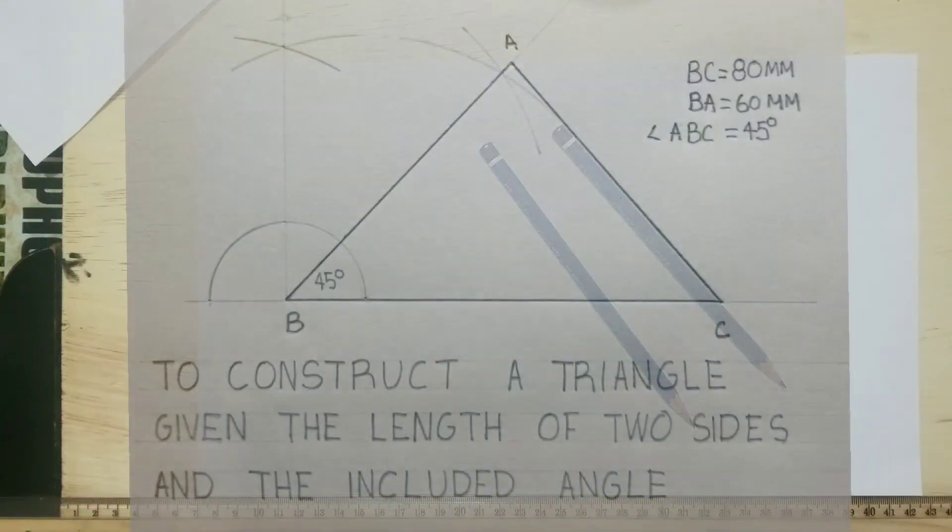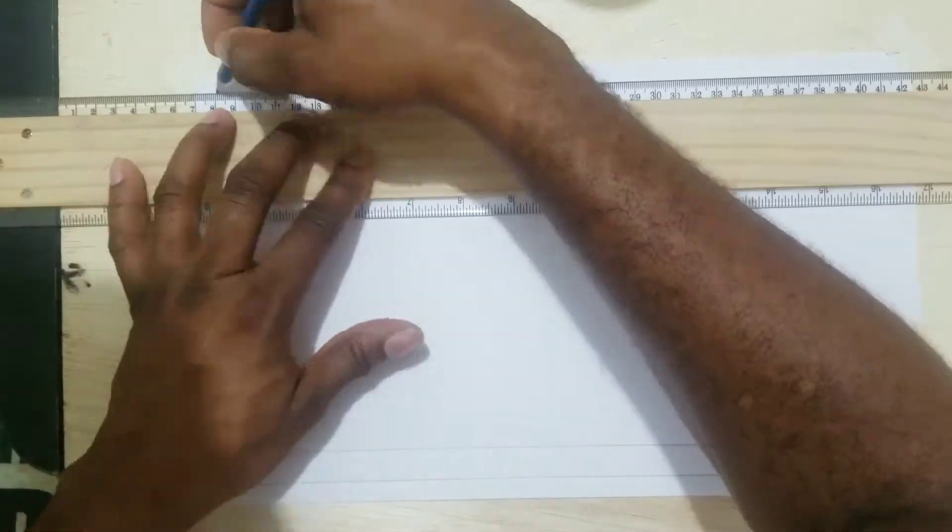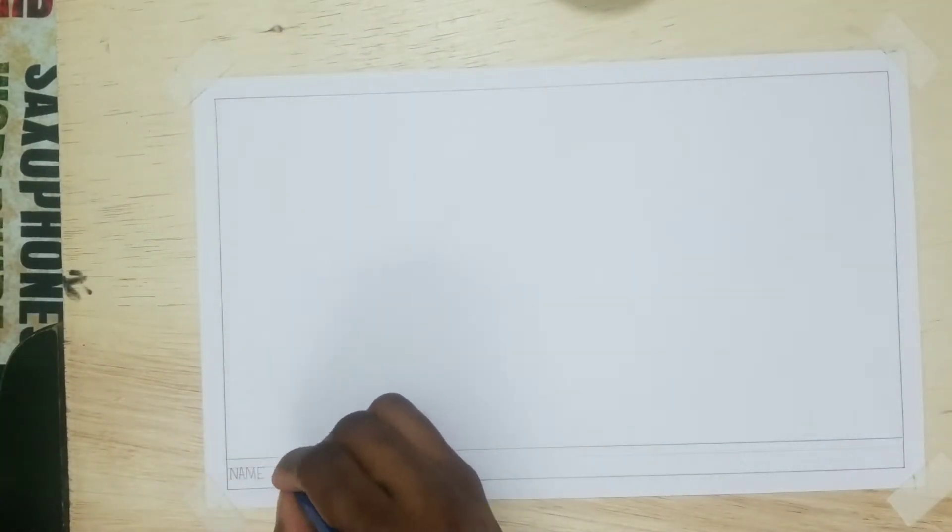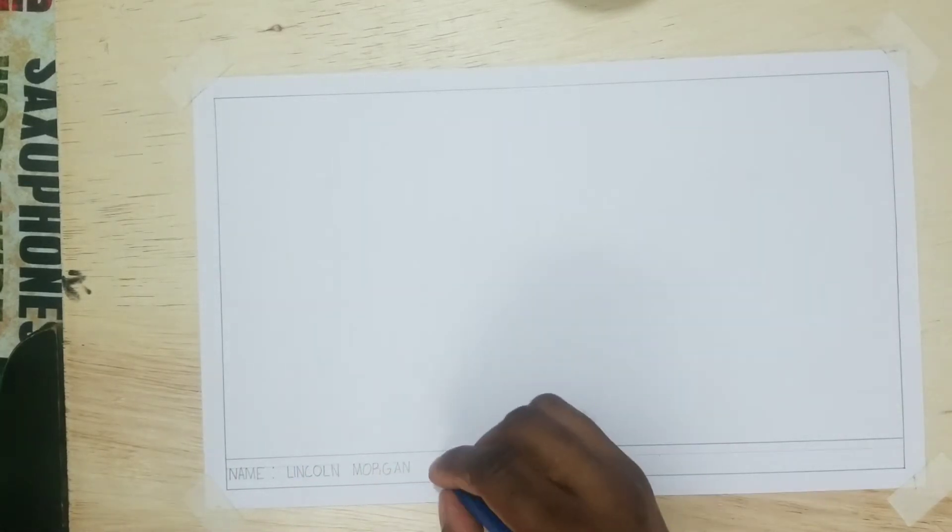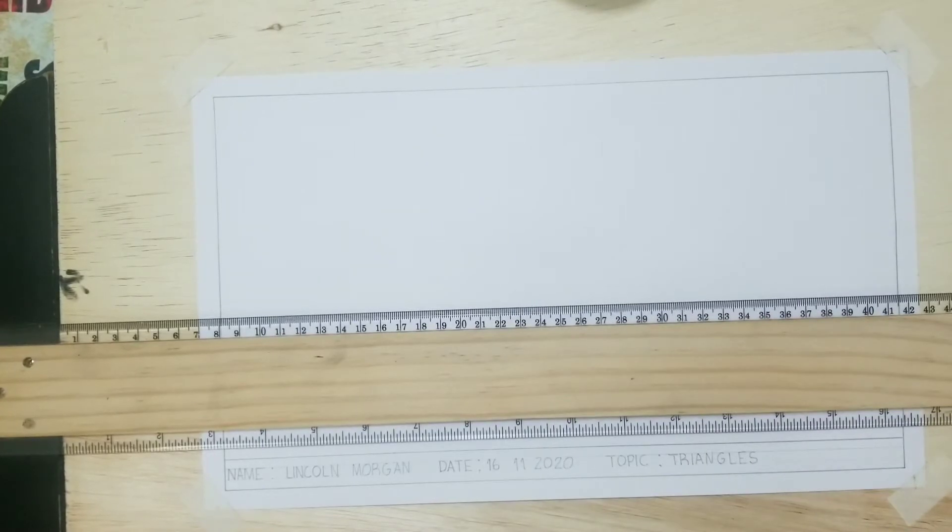I will now border my paper. We will first draw the base of the triangle and label it BC. The base is the lower horizontal part of the triangle.